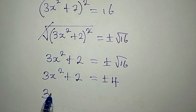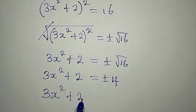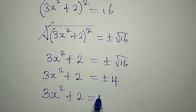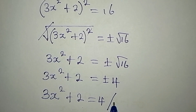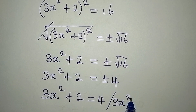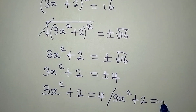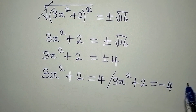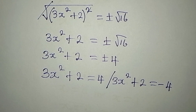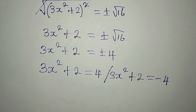This means we are going to make use of positive 4 and negative 4. So we have two equations to deal with: 3x squared plus 2 equals 4, or 3x squared plus 2 equals negative 4.